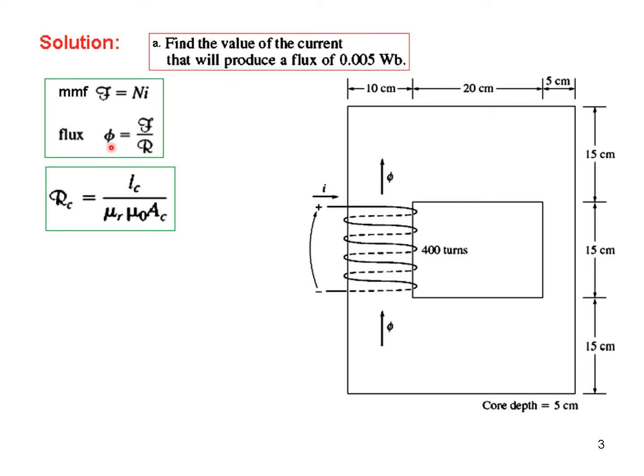Now how to find magnetomotive force? You know the flux is given in the question, so this is given. And this is the relation between flux, magnetomotive force and reluctance. So if we can calculate reluctance then reluctance multiplied by flux will give us the magnetomotive force which can be used here.